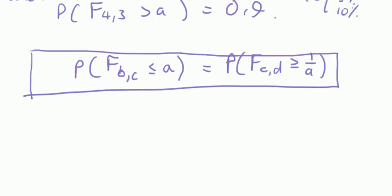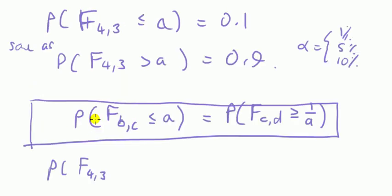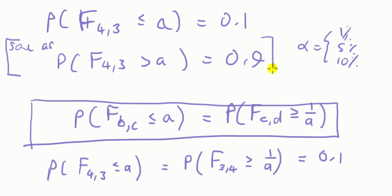So to apply in this context, we would say that probability of f(4,3) less than or equal to a is the same as saying probability f(3,4), because I swap the degrees of freedom around, swap the inequality sign around, greater than or equal to 1 over a. So we want, and this is equal to 0.1. Okay, so to be clear, we are now not using this method, because it ain't tabulated. We're using this rule instead.